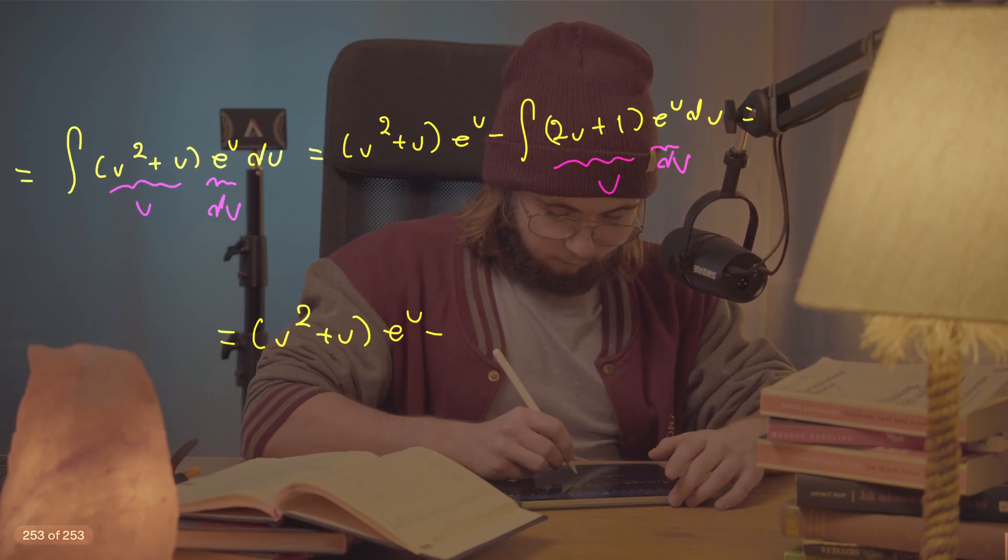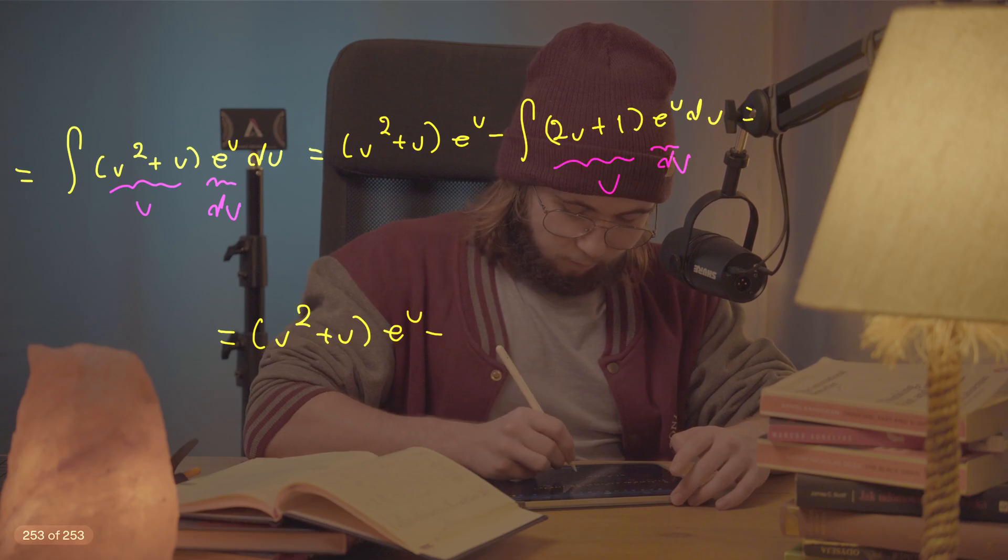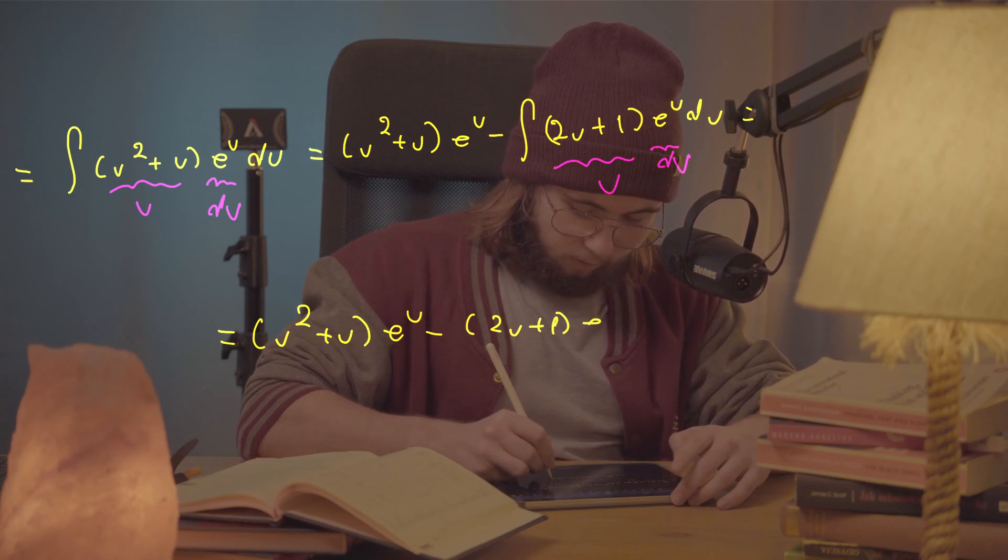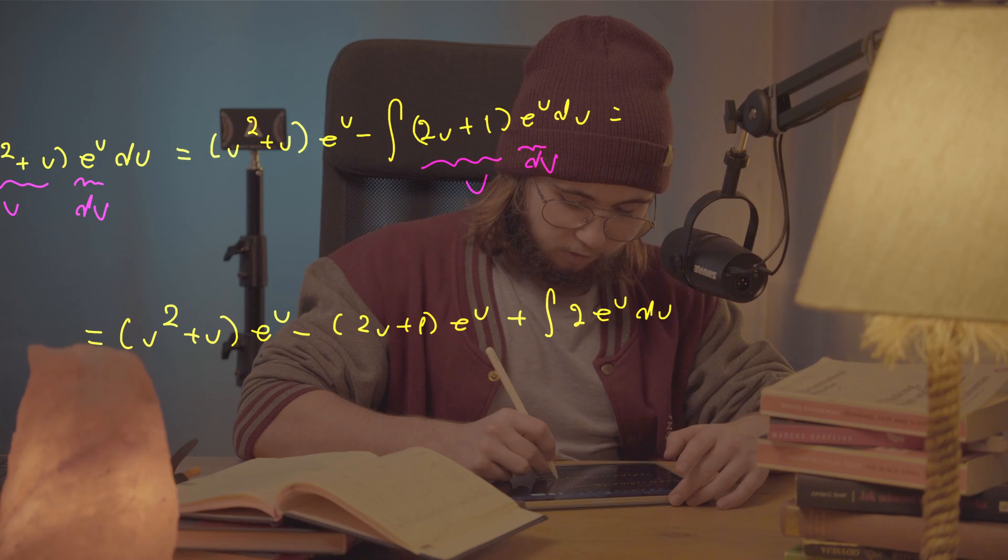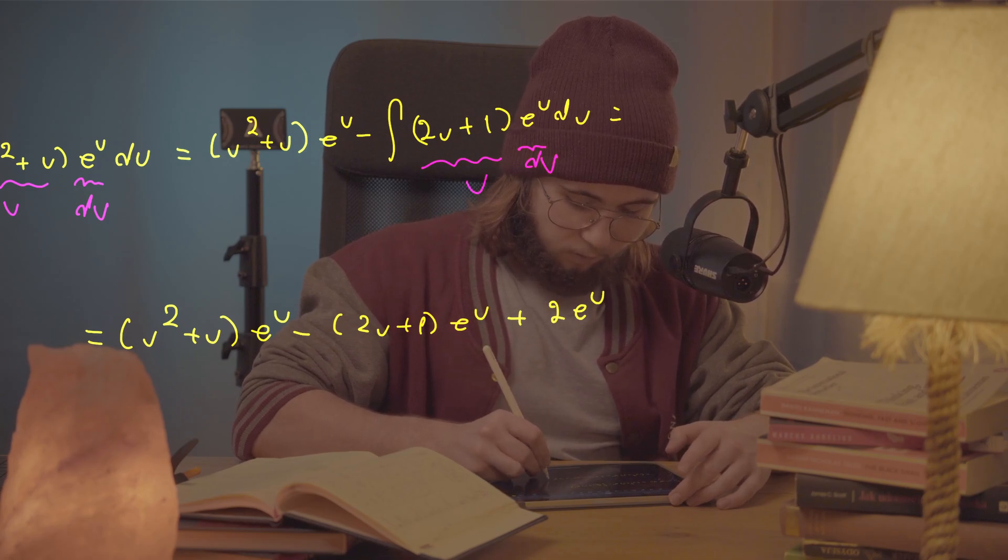this thing by integration by parts is going to be u squared plus u e to the u. And then minus is going to be two u plus one e to the u and then plus the integral of two times e to the u du, which is just two times e to the u, e to the u.